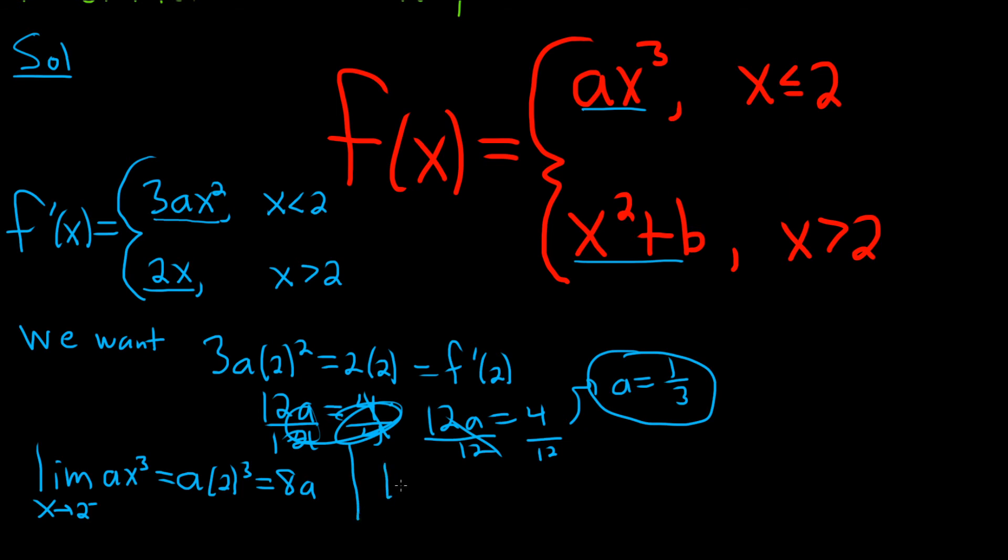Now let's take the limit from the right. Limit as x approaches 2 from the right. When we're approaching from the right, x is bigger than 2. So we have x squared plus b. And now you just plug in the 2 for your x. So 2 squared plus b, so 4 plus b.